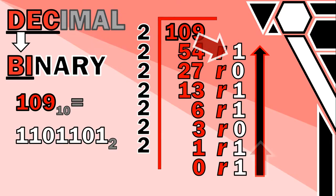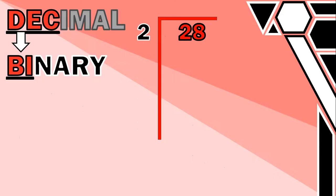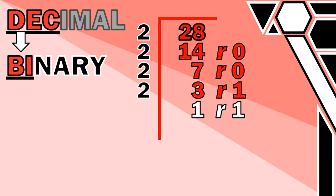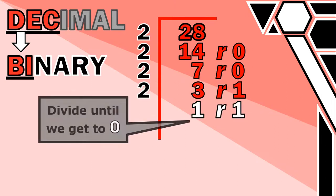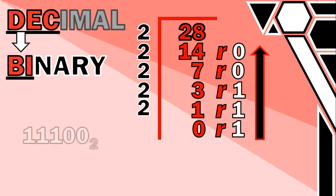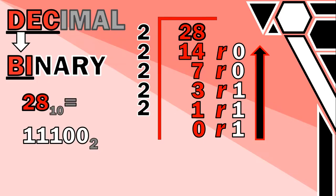In summary: take the number, divide it continually by the target base — in this case 2 — keep track of all the remainders, and read them from bottom to top. Let's verify with 28: 28 ÷ 2 = 14 remainder 0. Then 14 ÷ 2 = 7 remainder 0. Then 7 ÷ 2 = 3 remainder 1. Then 3 ÷ 2 = 1 remainder 1. Then 1 ÷ 2 = 0 remainder 1. Reading the remainders from bottom up gives 11100. So 28 in decimal equals 11100 in binary.